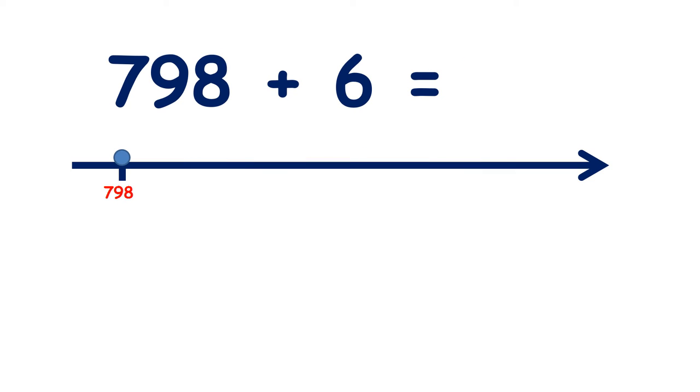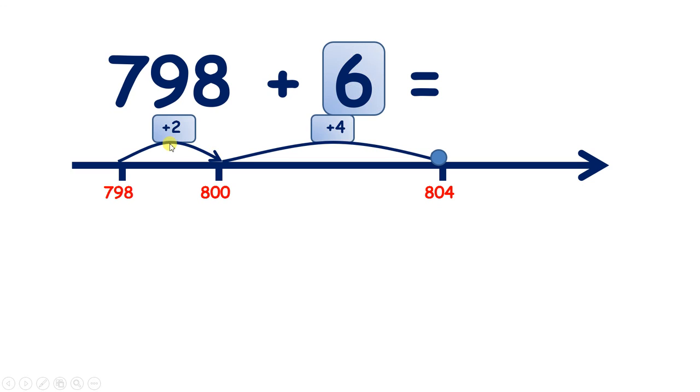But again, we can answer this question more quickly if we use bridging. So if we're on 798, our next multiple of 10 is 800. And we can add 2 to get to 800, and then add 4 more to get to 804. So we added 2, then added 4, so we've added 6 altogether. And that gives us our answer, 804.